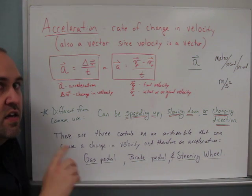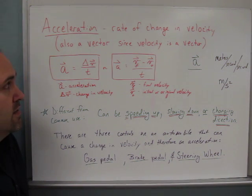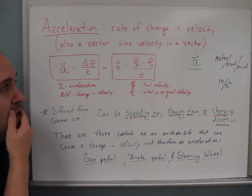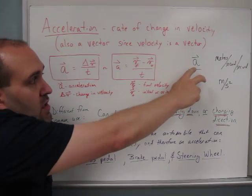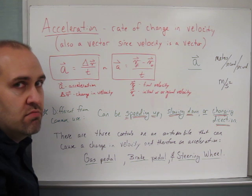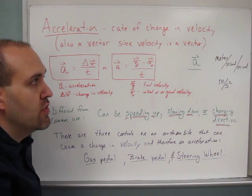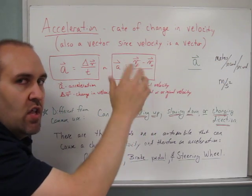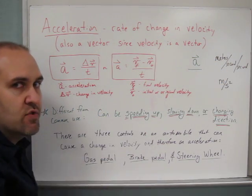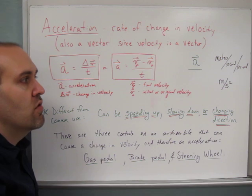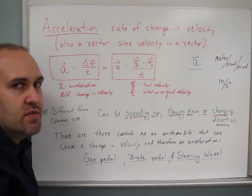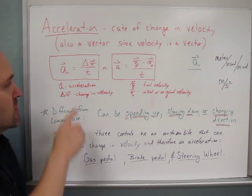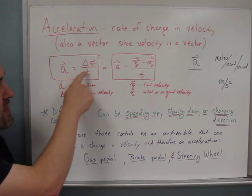And since velocity is a vector, acceleration is also a vector. And so we can abbreviate acceleration with a lowercase a and a vector symbol—that's what we use. And then the units are strange but you'll see why they exist here in a second. They're in meters per second—that's the velocity change—divided by a second, so meters per second per second, or you can write it as meters per second squared, that's the same thing. So acceleration is the change in velocity divided by the time—that is the delta v divided by t.